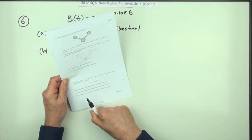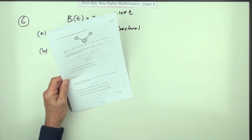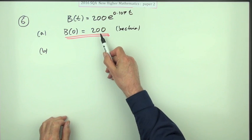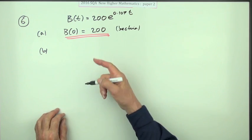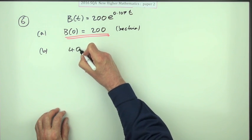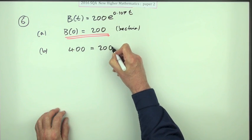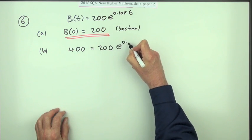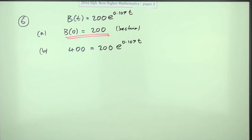Now part B: calculate the time taken for the number to double, for four marks. Well, since you know how many there are to start with, you can see what double the number is going to be. So you can go in with 400 equals 200 e to the 0.107t if it's going to double.